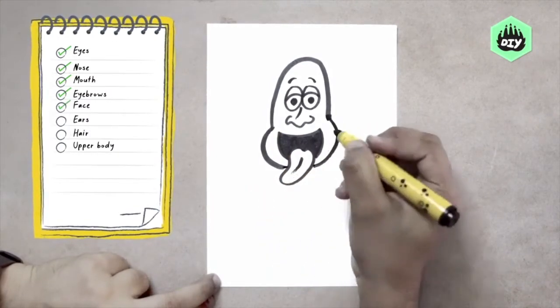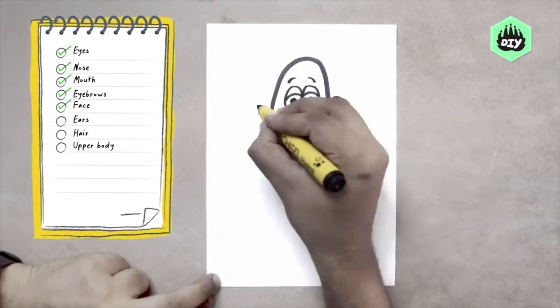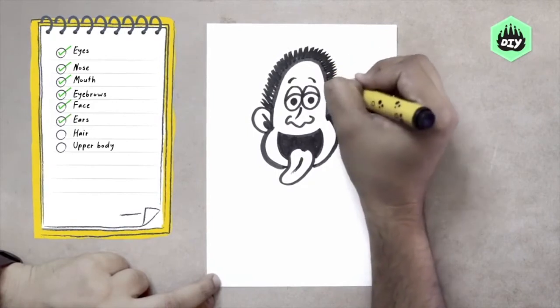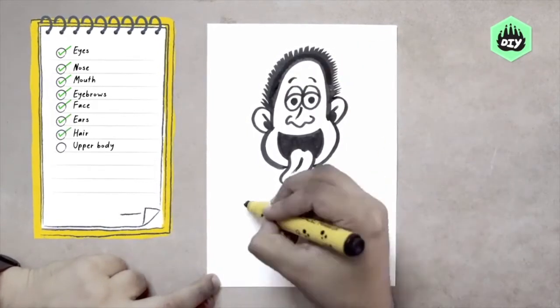Cheeks on both sides. Ears, like we've done before and we add a hairstyle to it. Spike hairstyle. Quirky.